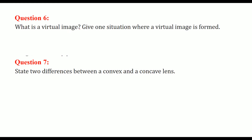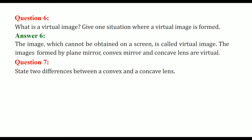What is a virtual image? Give a situation where a virtual image is formed. The image which cannot be obtained on a screen is called a virtual image — that is why it is called virtual. The images formed by a plane mirror, convex mirror, and concave lens are virtual.